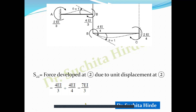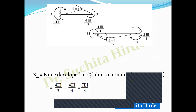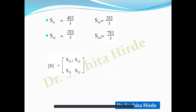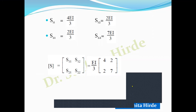This is how we get the second column of the stiffness matrix. We have now calculated all four stiffness coefficients: S11, S12, S21, and S22. Writing them in matrix form, we can observe that EI/3 is common in all coefficients, so we factor it out. The resulting stiffness matrix is (EI/3) × [[4, 2], [2, 7]]. This is how to develop the stiffness matrix for the given coordinate system.